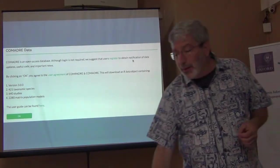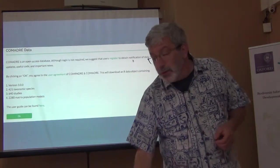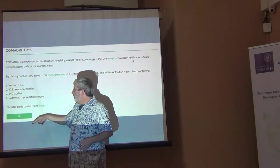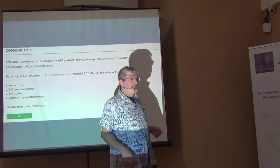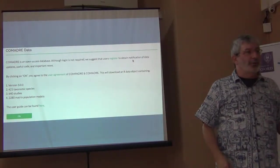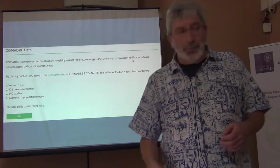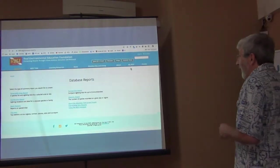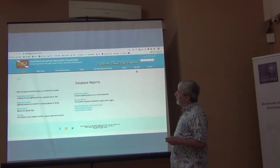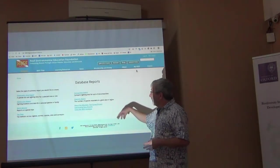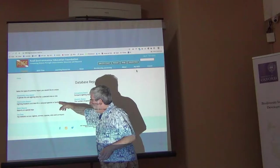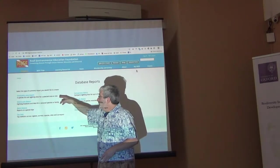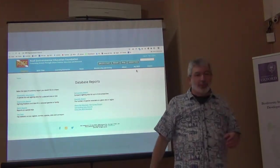You can query COMPADRE and see they have 421 species, 640 studies, and 2,280 matrix population models. I also found the Reef Environmental Education Foundation, which has distribution reports, batch reports from trips and expeditions, and geographic area reports — but again, not really population data.